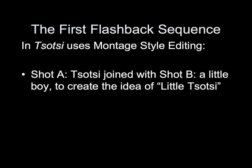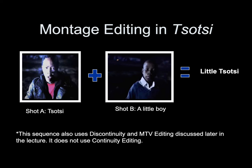When you re-watch Tootsie after this week's lecture, pay special attention to the first flashback sequence because it uses montage style editing. Shot A is a shot of Tootsie joined with Shot B, a little boy, used to create the idea of little Tootsie. This sequence also uses discontinuity and MTV editing discussed later in the lecture — it does not use continuity editing. Montage editing is used here to create the third and higher meaning of little Tootsie.